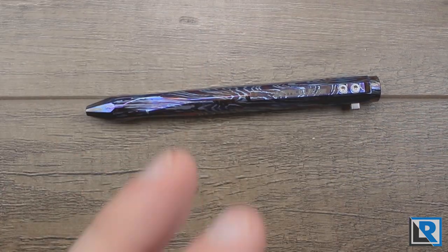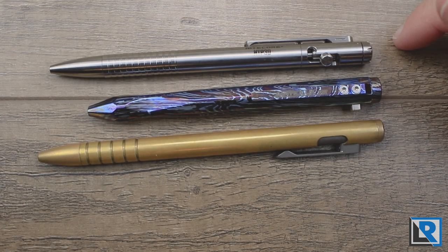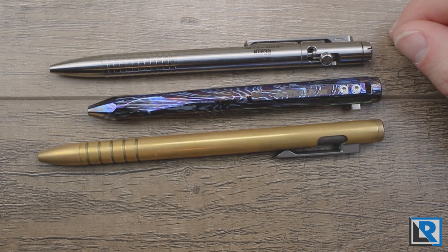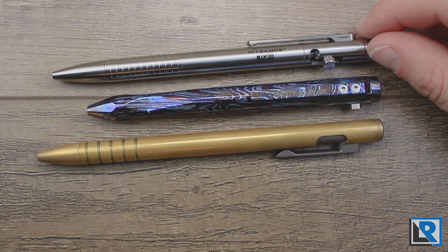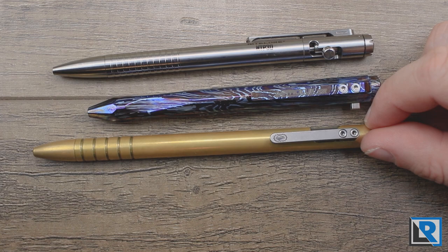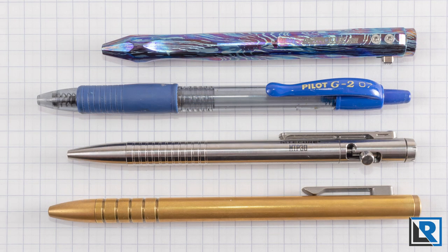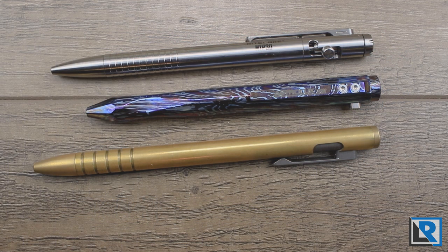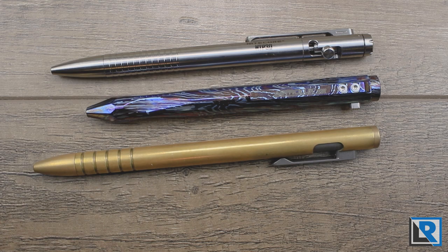I've got a couple other pens here as well. This top one is a Nitecore NTP30 and this bottom one is the TI Scribe in brass. For comparisons on weight: my brass TI Scribe bolt with the cartridge is 34.9 grams. My Nitecore NTP30 also in titanium is 28.8 grams. So the Astrolux being made of titanium is a little bit heavier compared to the other bolt action pens I have.